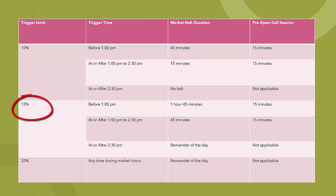For the second slab of 15%: if the market falls by 15% before 1 PM, the market is halted for 1 hour 45 minutes. If the fall is 15% or more at or after 1 PM to 2:30 PM, the market is halted for 45 minutes. And if the fall occurs at or after 2:30 PM, the market is shut for the remainder of the trading session. The third limit: if the market falls by 20% at any time during market hours, the market will be shut for the remainder of the day.